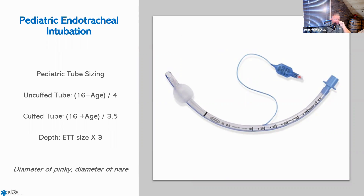Pediatric intubation and tube sizing: for an uncuffed tube, the formula is 16 plus the age divided by 4. For a cuffed tube—now favored by the American Academy of Pediatrics and the American Heart Association—the formula is 16 plus the age divided by 3.5. Commit the uncuffed formula—16 plus age divided by 4—to memory prior to your registry exam.